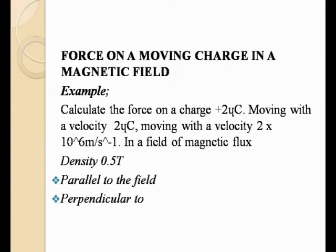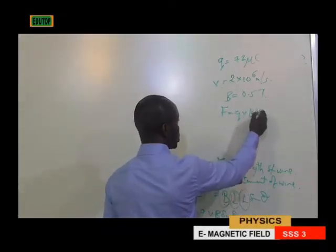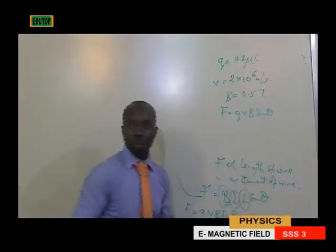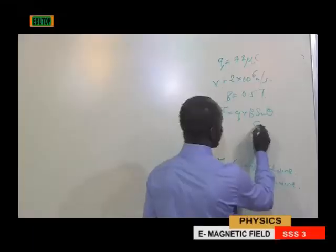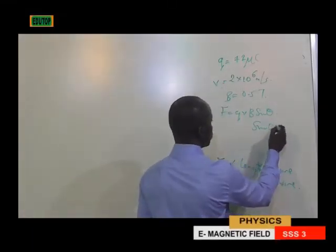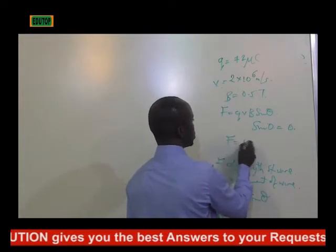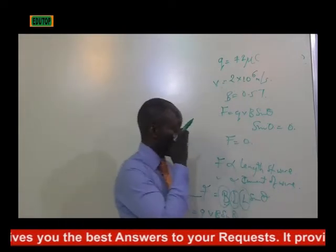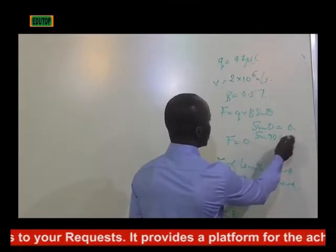Now let's calculate the force on the field. So we are looking at F, which will be QVB sin theta. Now look at those two statements. Number one: when it is parallel to the field, your sin theta would be sin 0. And your force would be 0. But when it is perpendicular to the field, you have sin 90. Your sin 90 is 1.